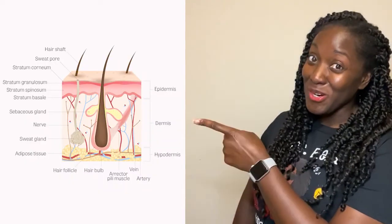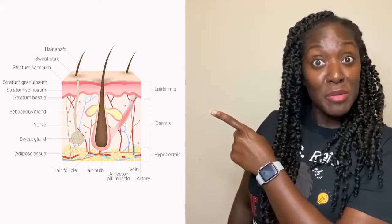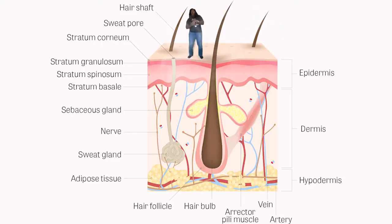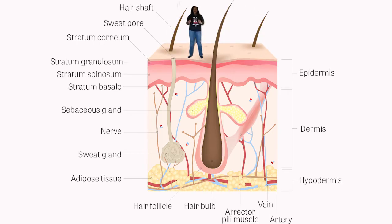Your skin has two main layers: the epidermis and the dermis. Underneath the dermis we have the hypodermis. At the surface, we have the hair shaft — the part of the hair that projects beyond the skin surface. Close to the hair shaft you should see sweat pores, which are openings to sweat glands at the surface of the skin.